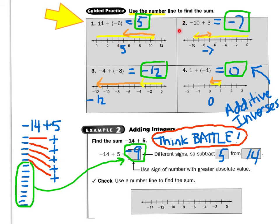Take a look at number two. It says negative ten plus three. Remember, always start at zero. And the negative ten tells me to move backwards ten, to negative ten. Then the positive three tells me to move to the right three. So I end up on negative seven. So negative ten plus three equals negative seven.